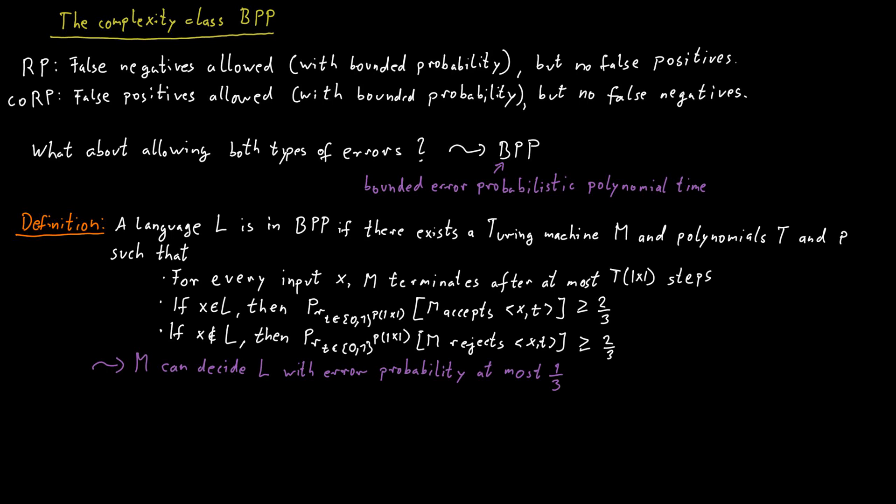Choosing the error probability to be one-third in this definition is somewhat arbitrary again, just like this constant one-half was somewhat arbitrary for RP and coRP. However, we have to be slightly careful about what constant we allow in place of the two-thirds.